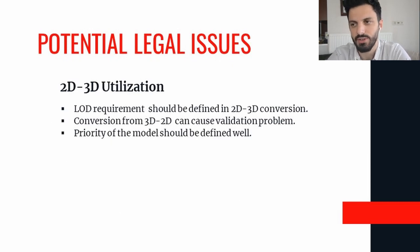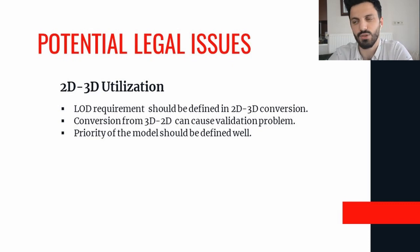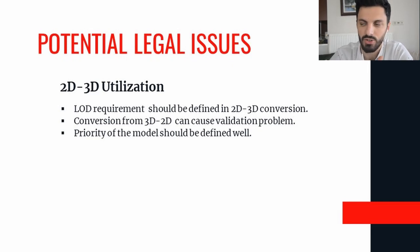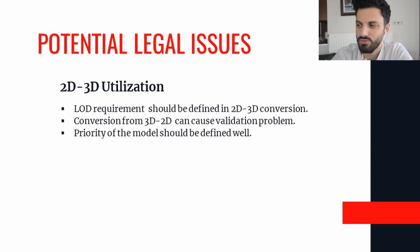For the 2D/3D utilization category, as the sector moves toward BIM, traditional 2D design documents of buildings are being converted into 3D models. While this conversion takes place, the required LOD must be defined very well. Sometimes the conversion from 3D to 2D can cause a validation problem for the quality of the model, since handovers are generally made in 2D formats to agencies. It may also be ambiguous which model should have priority where there is a conflict between 2D and 3D documents, so this must be clearly defined.